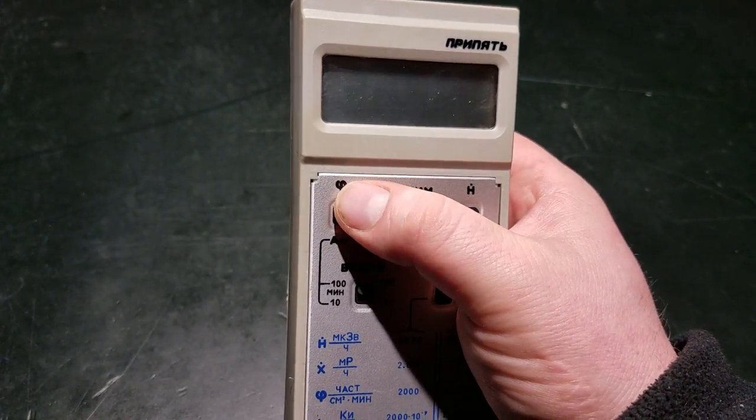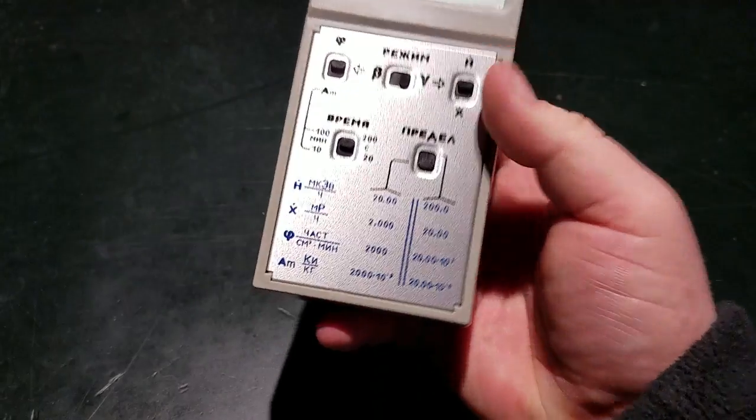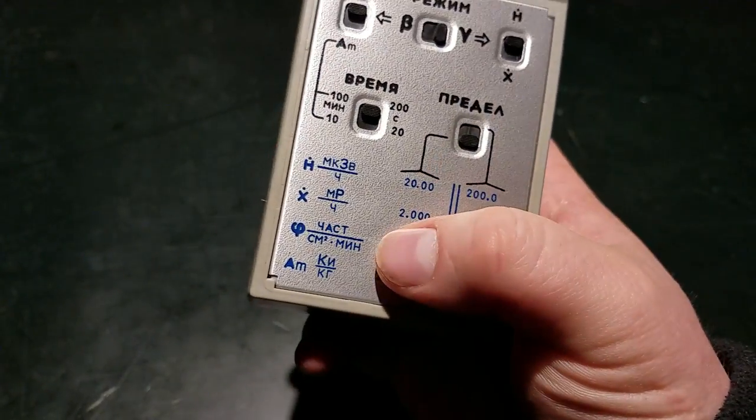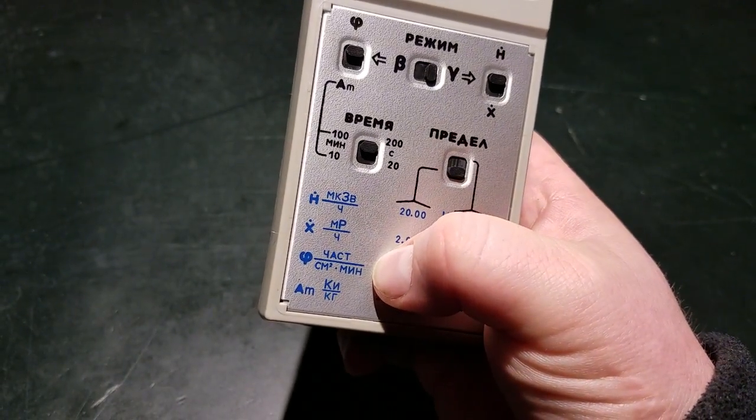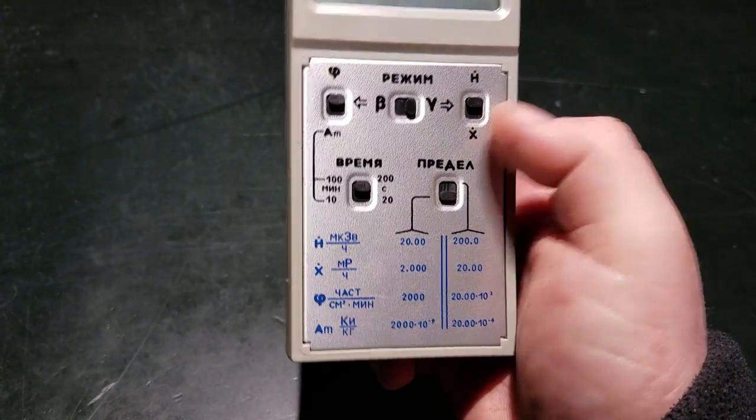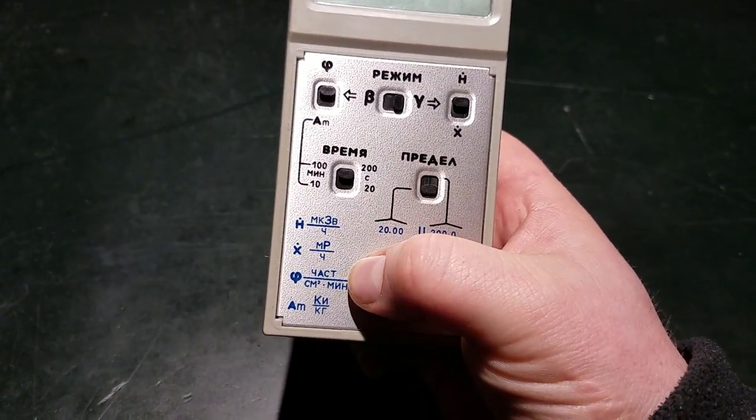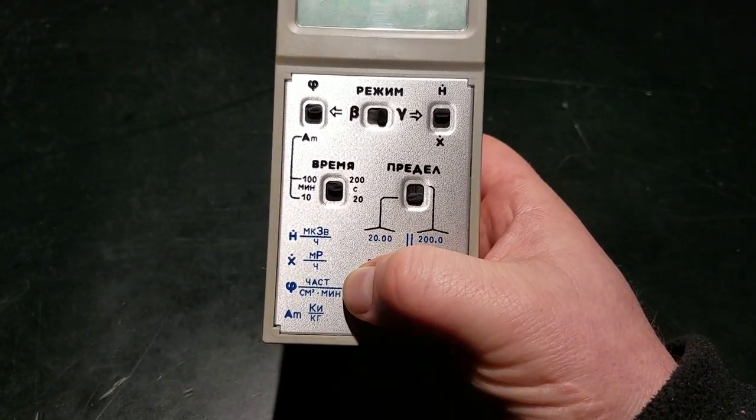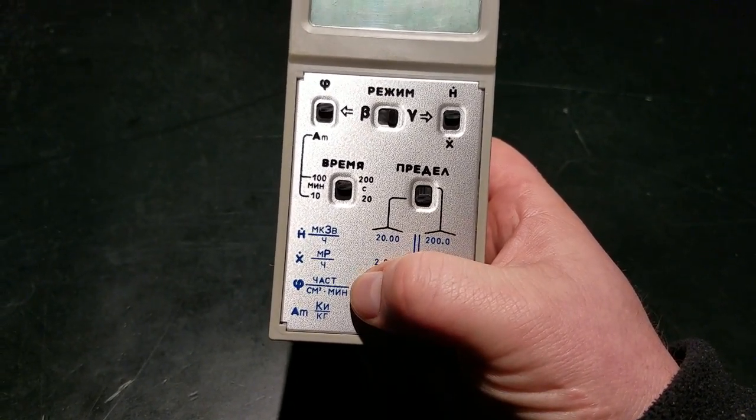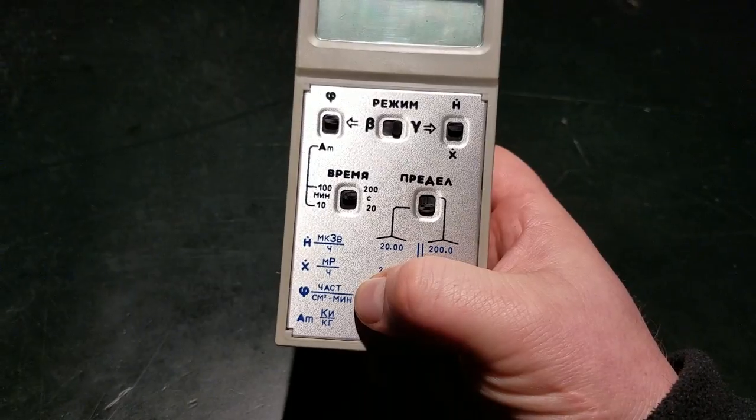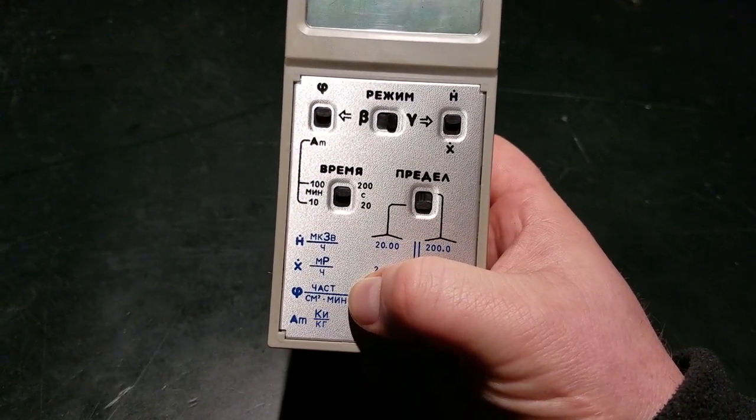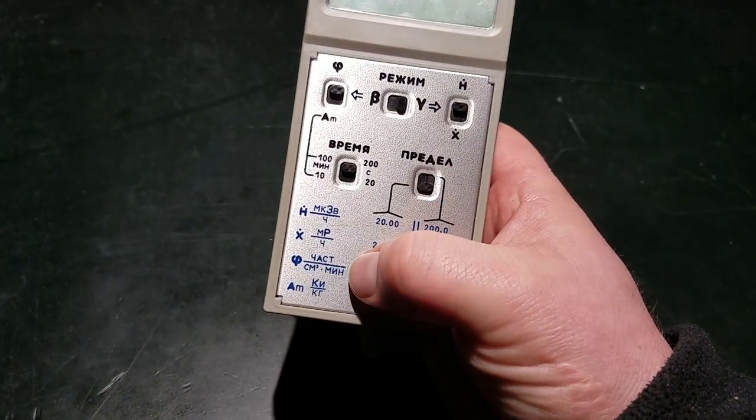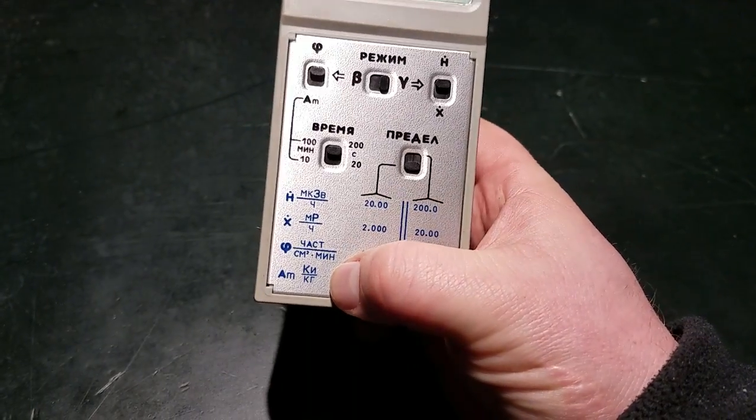In beta mode, you can either do beta flux density, which is measured in particles per centimeter squared every minute. So if you imagine, this is trying to approximate how many particles, if you had one centimeter squared in the air, this is how many particles are passing through that every minute.